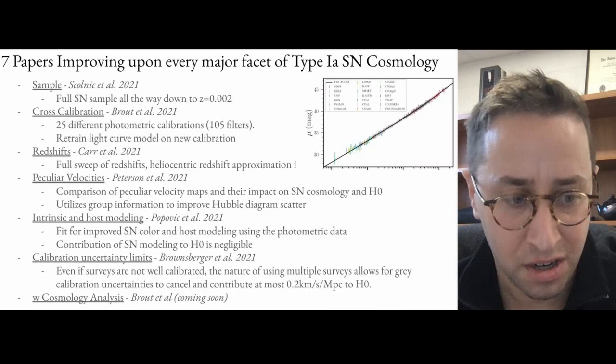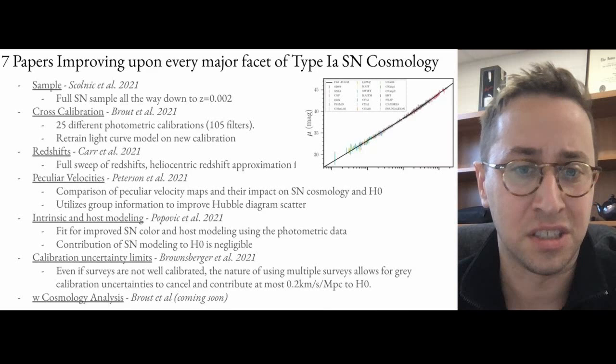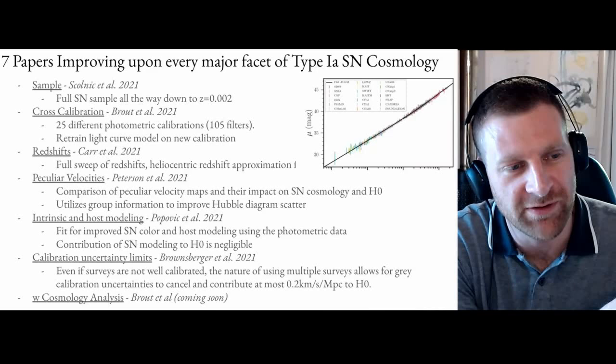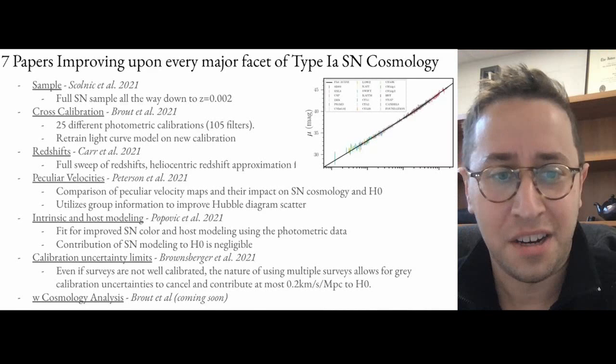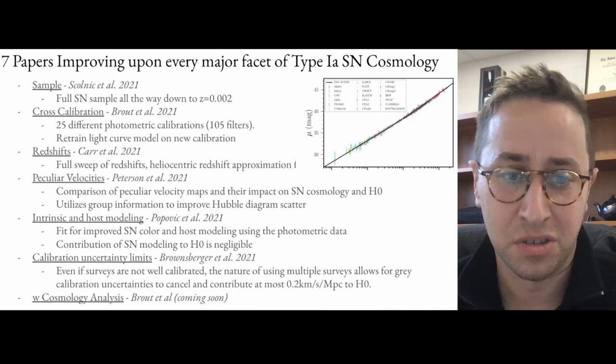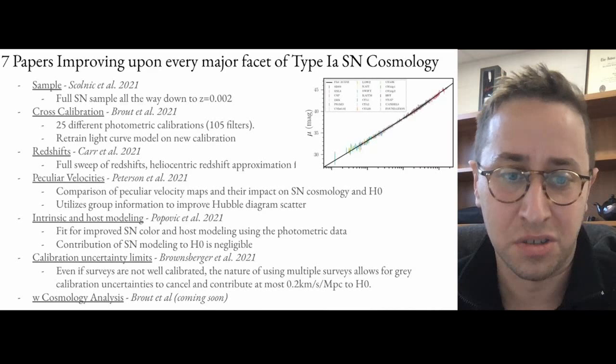What we'll have next month is a big analysis on how well we can constrain the equation of state of dark energy. For the purposes of the SHOES analysis, the supernova side just can't move things very much. When you say each one of these is 0.2, if I add up 0.2 six times I get to 1.2, but they add in quadrature and some are more like 0.1 to 0.2, so it adds up to a small number — much smaller than the uncertainty in H0.